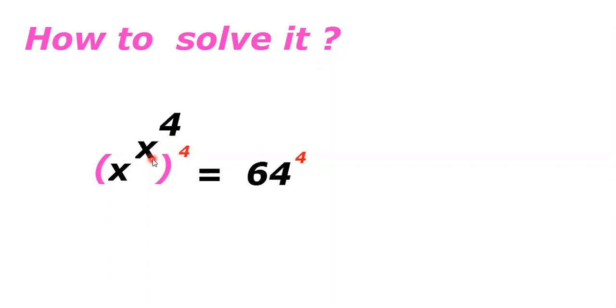Do whole power 4 on both sides. x power x power 4, whole power 4, is equal to 64 power 4. Now this a power m whole power b will be a power b whole power m, so this equation becomes x power 4 whole power x power 4.